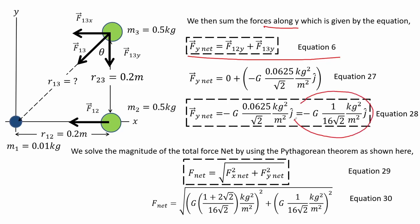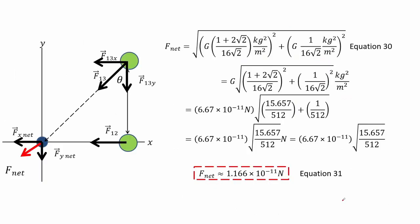We then solve for the magnitude of the net force using the Pythagorean theorem, as shown in equation 29, where we get equation 30. We continue to calculate the net force as shown in equation 30, substituting and simplifying the equation, and we arrive at the value of its magnitude as given in equation 31.